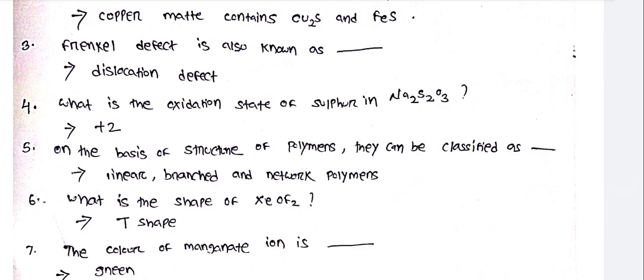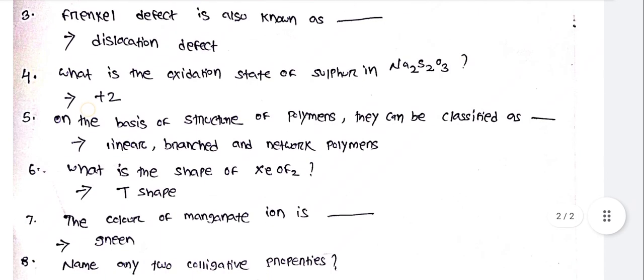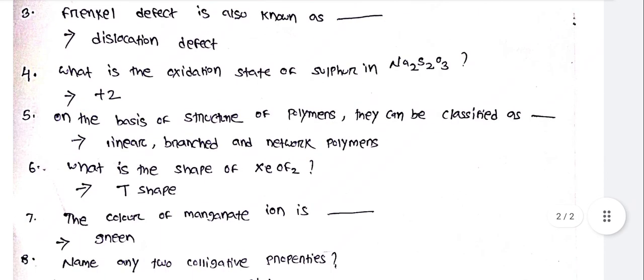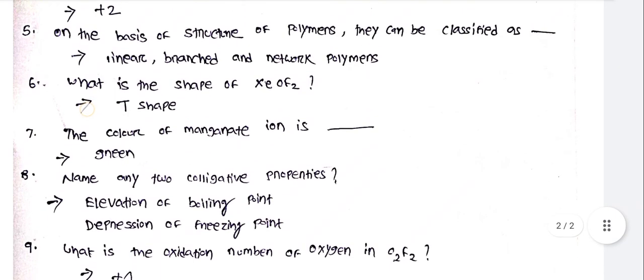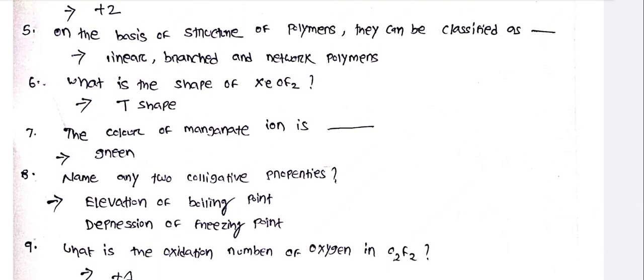What is the oxidation state of sulfur in Na₂S₂O₃? On the basis of structure, polymers can be classified as linear, branched, and network polymers. What is the shape of XeOF₂? T shape.